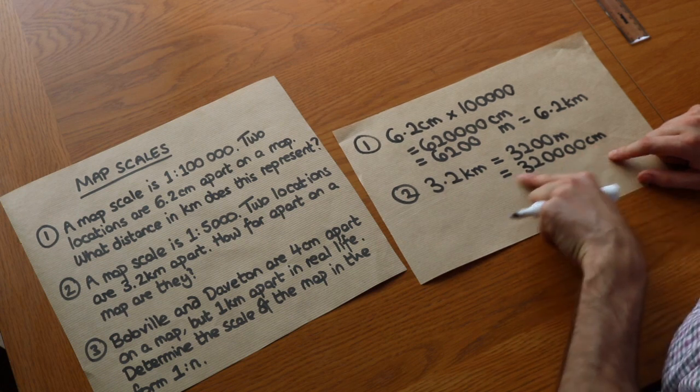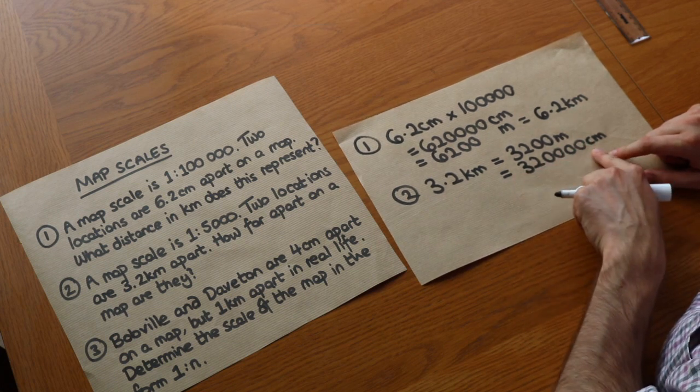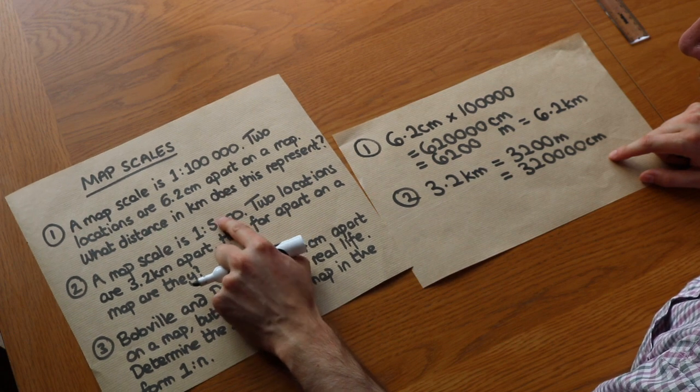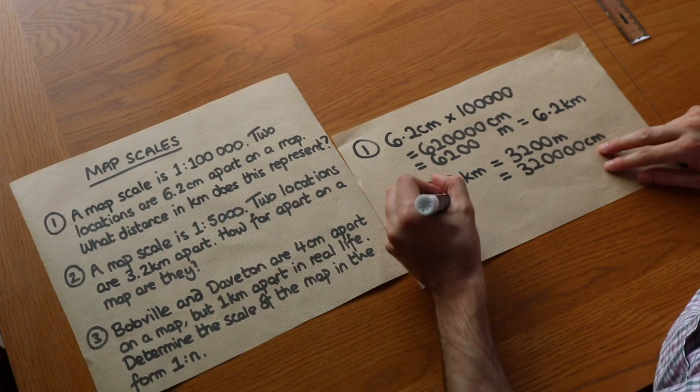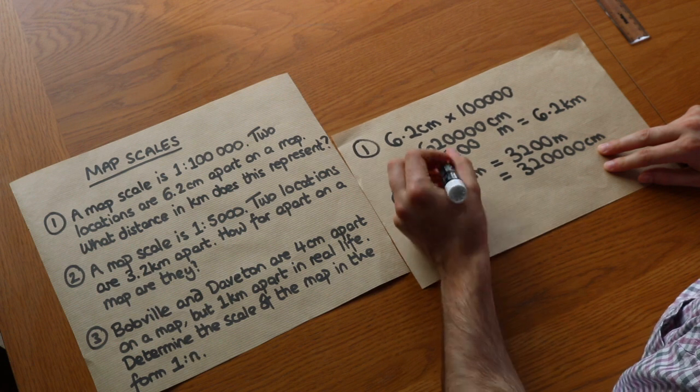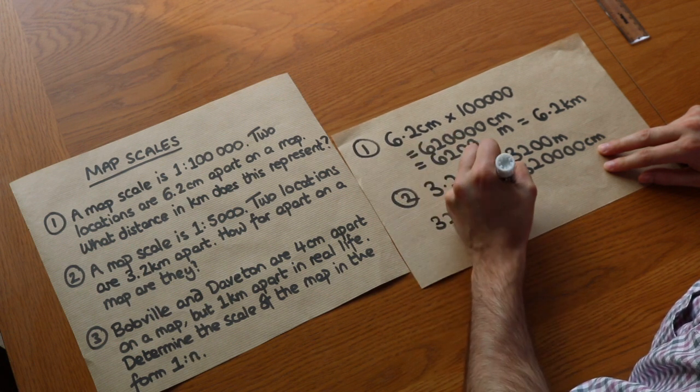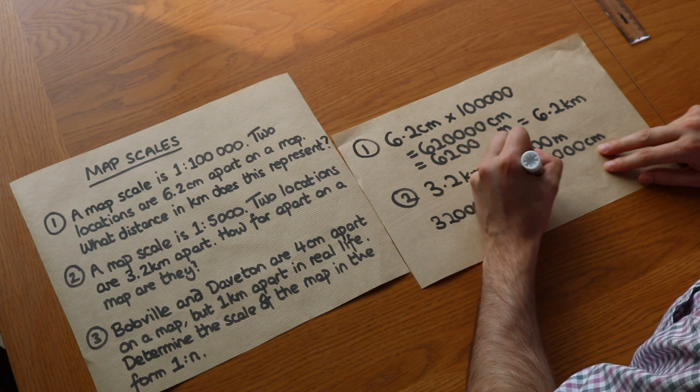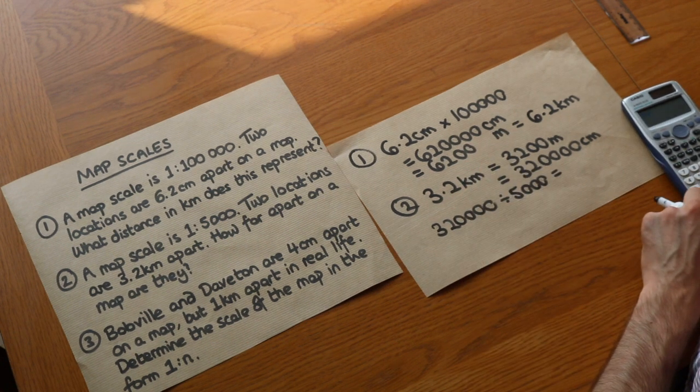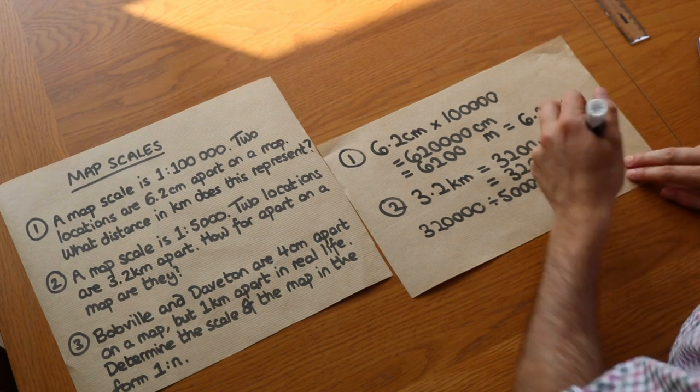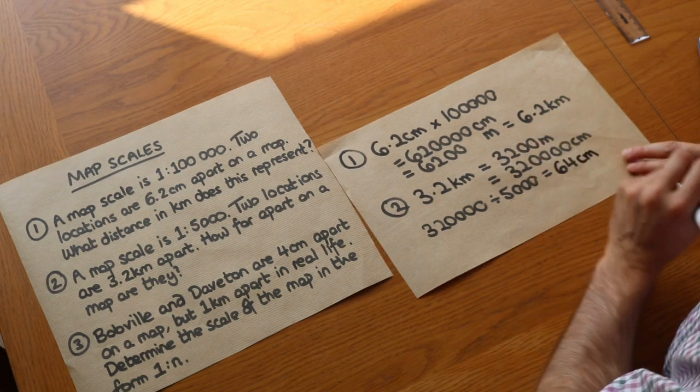Now we've got the distance still in real life, that's still the real life distance, but we want it on our map. So on our map it's 5,000 times smaller, so we just need to do 320,000 divided by 5,000, and that gives us 64. Because we're in centimeters there, we're still in centimeters now, so that means it'd be 64 centimeters on the map, which must be a pretty big map to be honest.